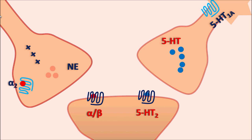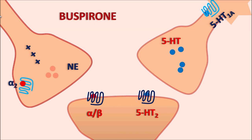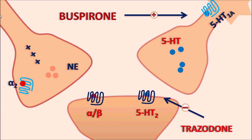The 5HT1A receptor can inhibit the release of 5HT. When 5HT is released, it acts on this 5HT1A receptor to auto-inhibit further 5HT release. Buspirone can activate these 5HT1A receptors, thereby controlling serotonergic transmission and release of 5HT, which in turn controls anxiety in patients.